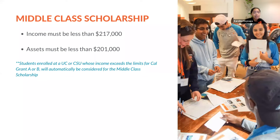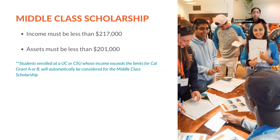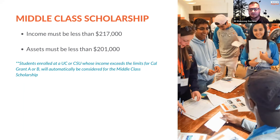About the middle class scholarship: to be considered, your income must be less than $217,000 and your assets must be less than $201,000. Students enrolled at a UC or CSU whose income exceeds the limits for Cal Grant A or B will automatically be considered for a middle class scholarship. This dispels the myth that if you are middle class, you can't get scholarships — Cal grants and scholarships are still available.